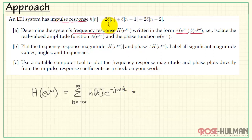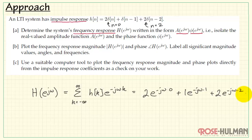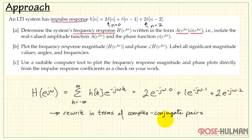In this particular impulse response, we see that the coefficient at n equals zero is two, and the coefficient at n equals two is also two. Of course, there's a coefficient at n equals one as well. We'll start out with the coefficient at n equals zero, so we take k equals zero in our summation. We have a coefficient one at index one, and then a coefficient two at index two.